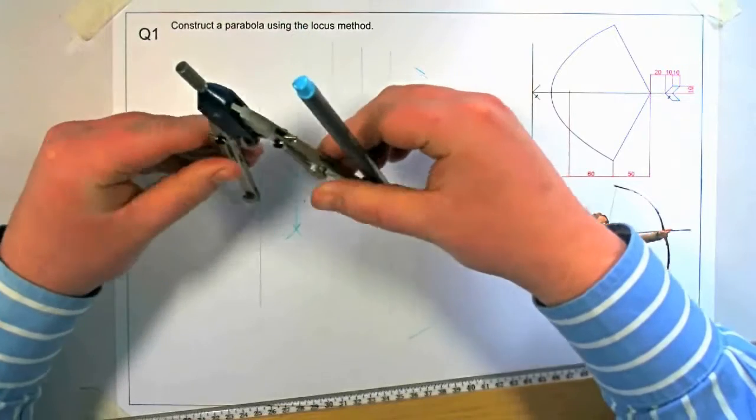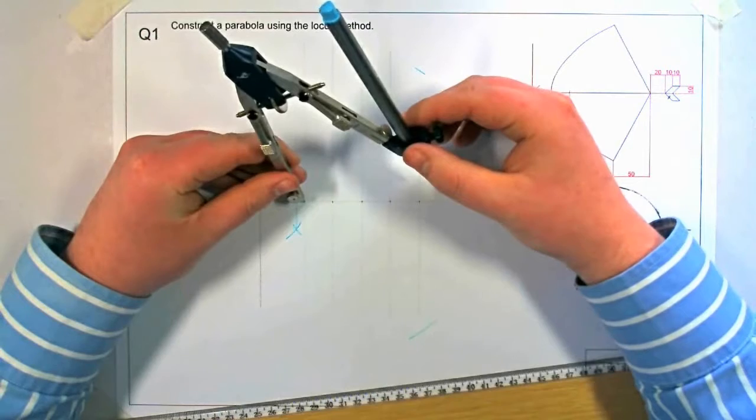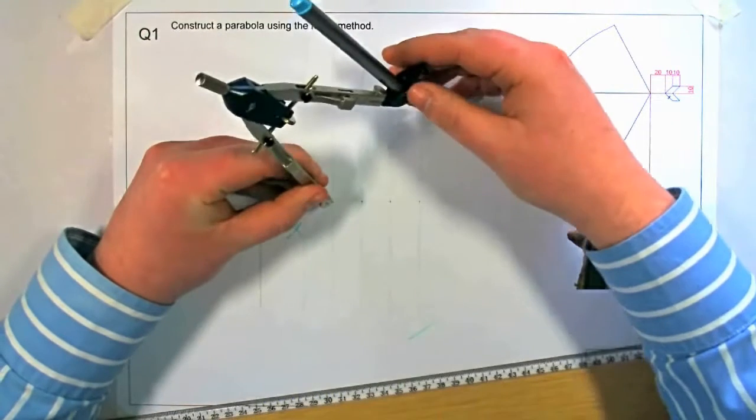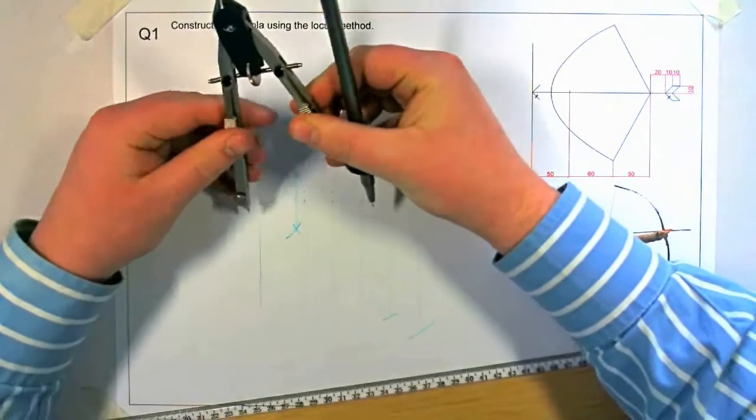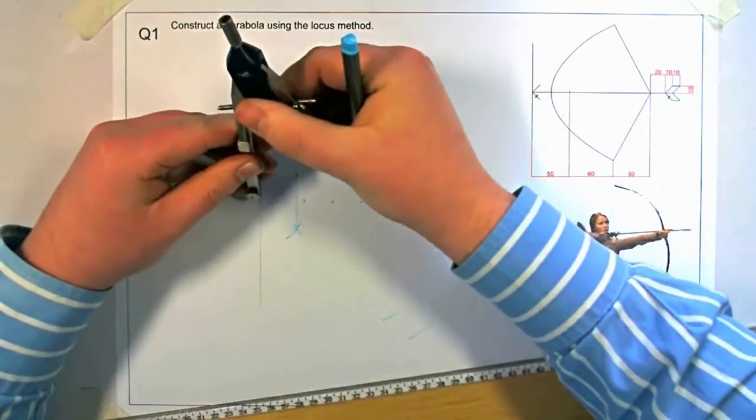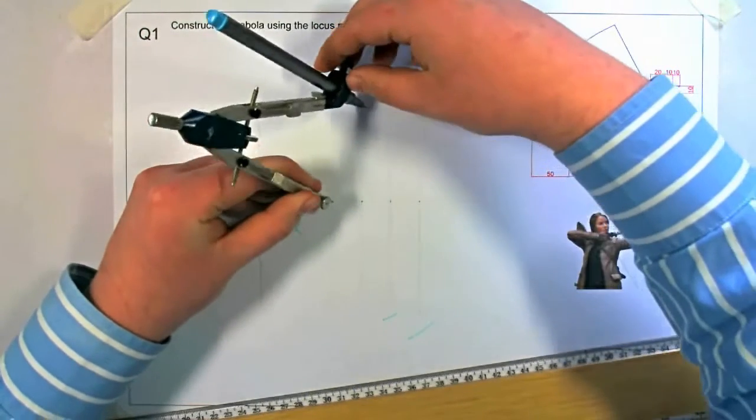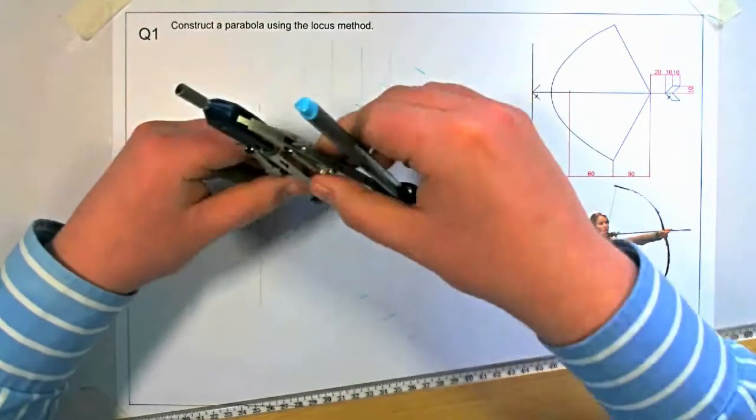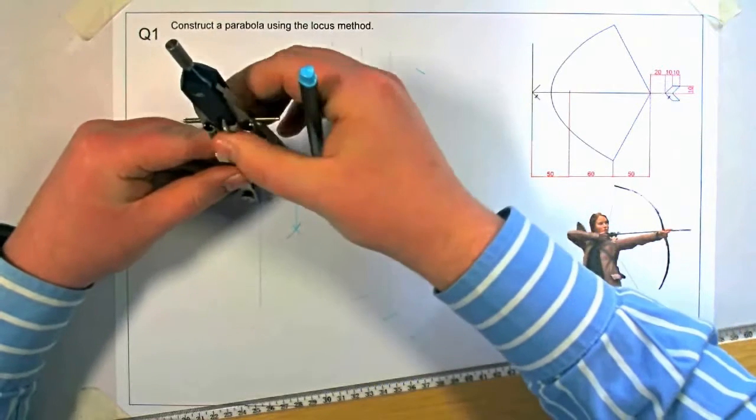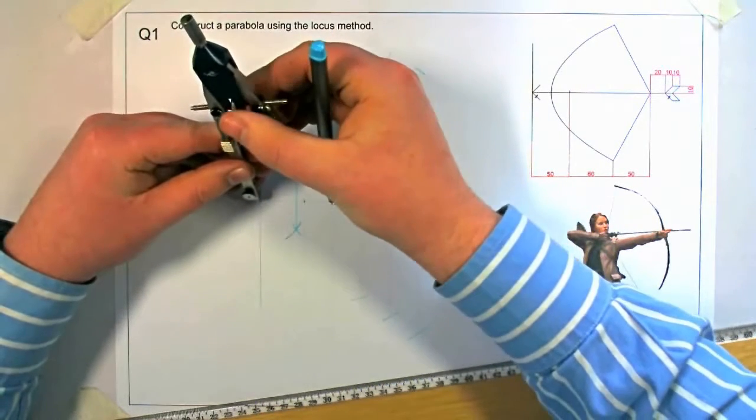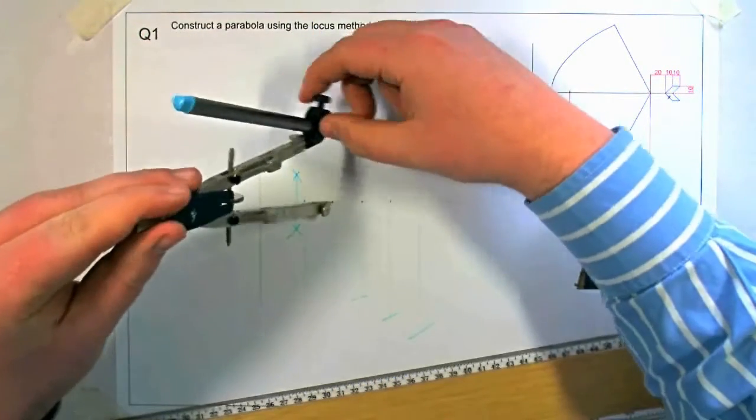As shown. So again from the directrix to the division line. From the focal point. Ensure it's the focal point and swing it onto the relevant lines again.